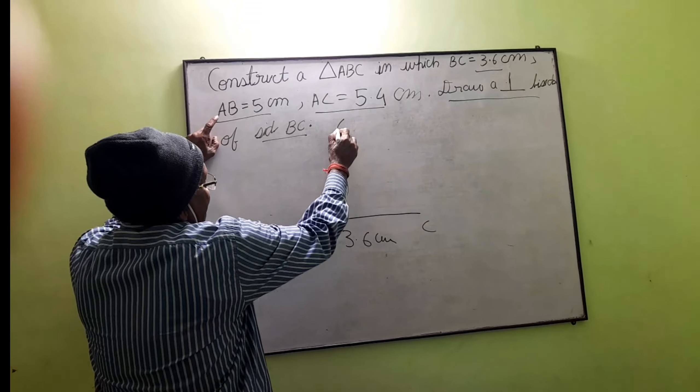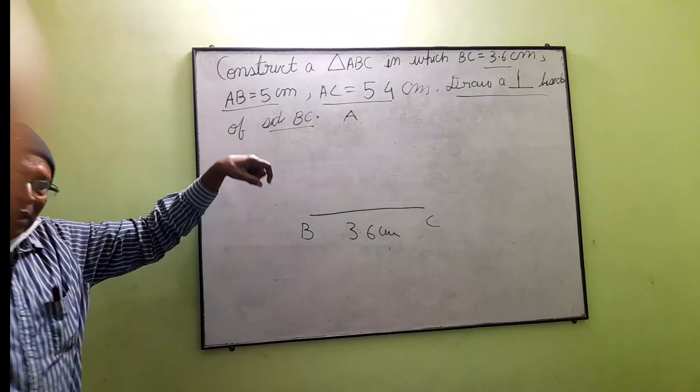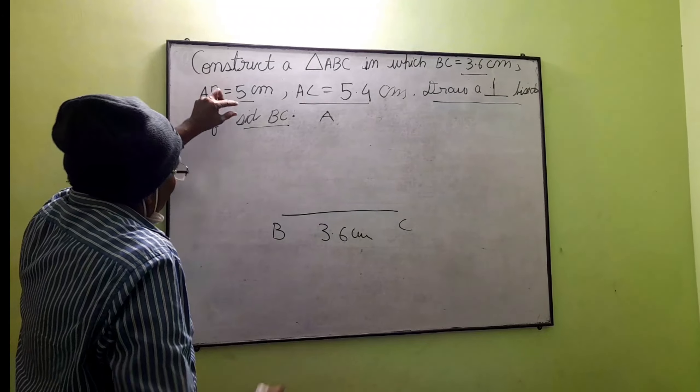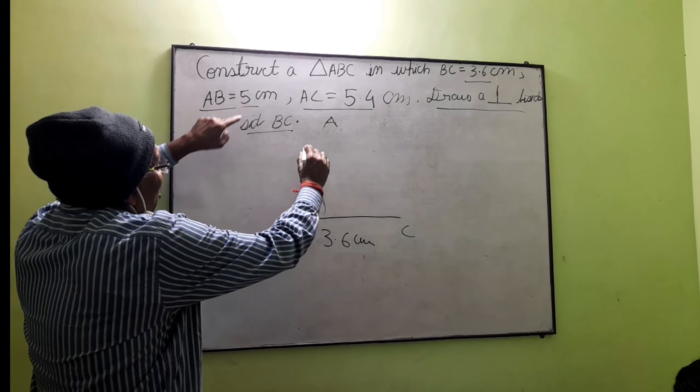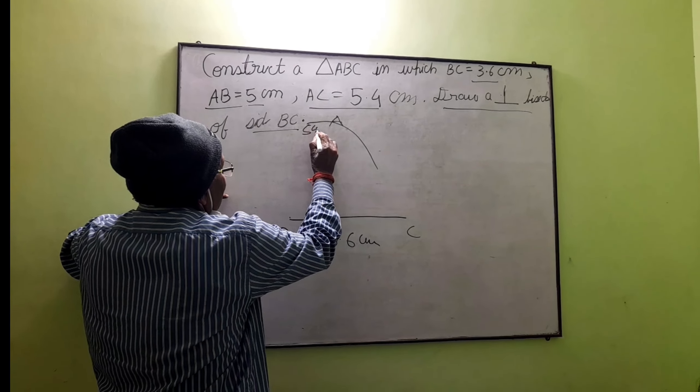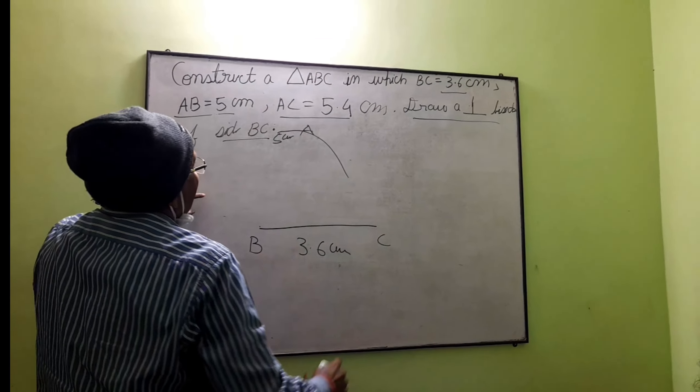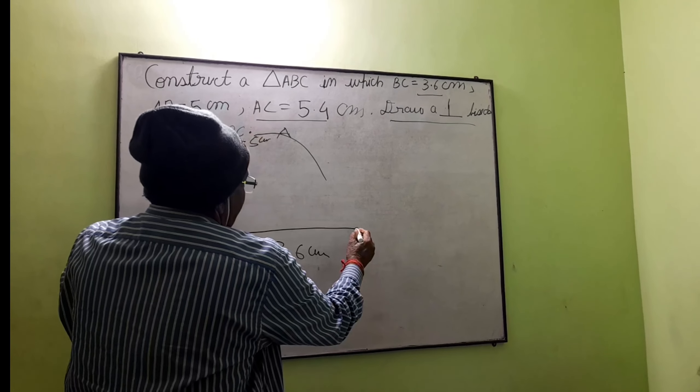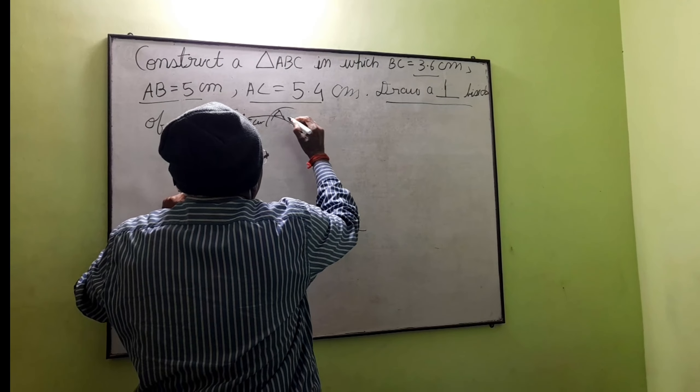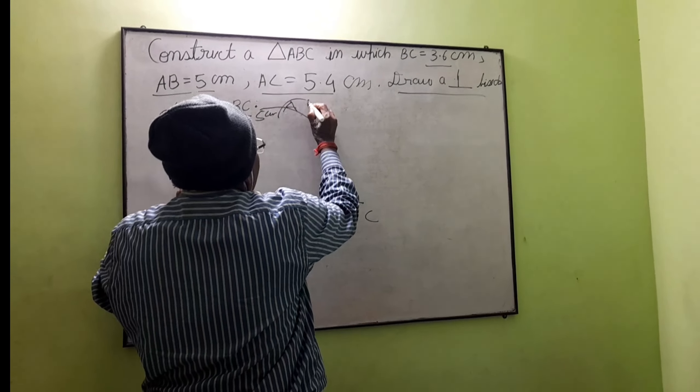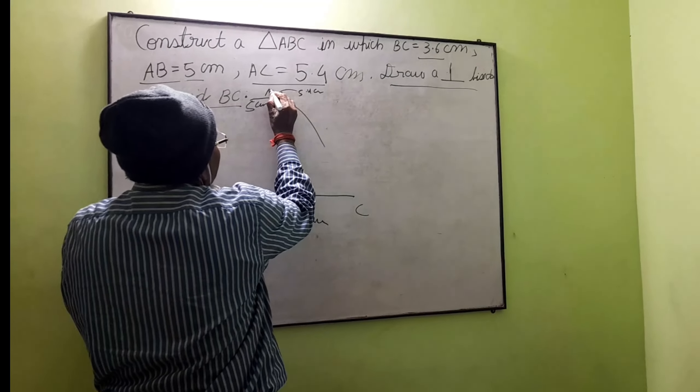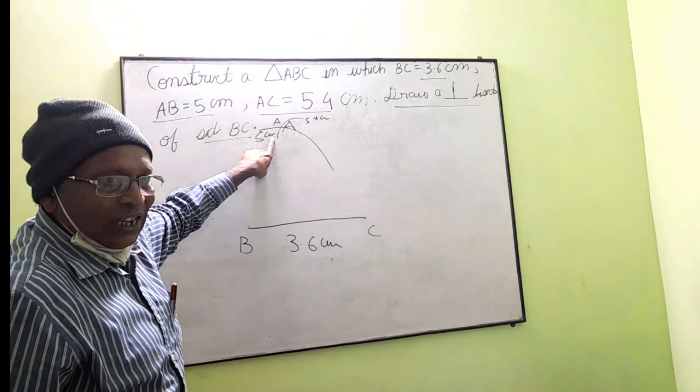Next, you have to find point A. To find A, from B you will cut an arc of 5 centimeters. From C, cut an arc of 5.4 centimeters. Where both arcs intersect each other, you got that point A.